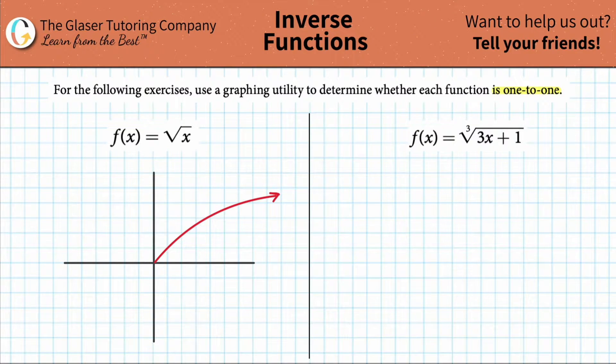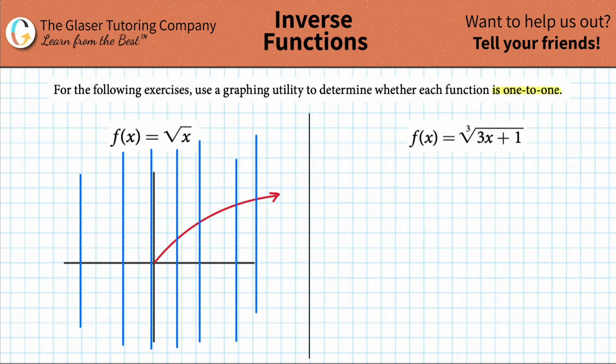Now the way to test this is by using the vertical line test. So what that means is you draw vertical lines, anywhere you like. If all of these vertical lines do not intersect your function in more than one place, then your function is a one-to-one function.